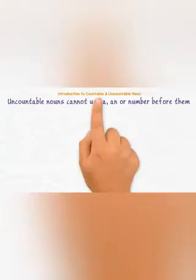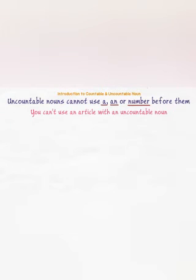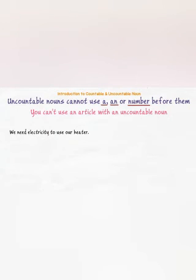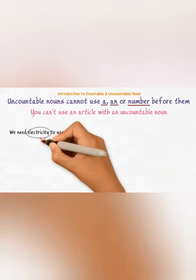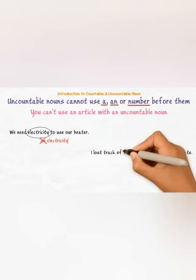Uncountable nouns cannot use a, an, or a number before them. You can't use an article with an uncountable noun. For example: 'We need electricity to use our heater' — we can't say 'an electricity' because it is an uncountable noun. In another example: 'I lost track of time and we stayed up very late'